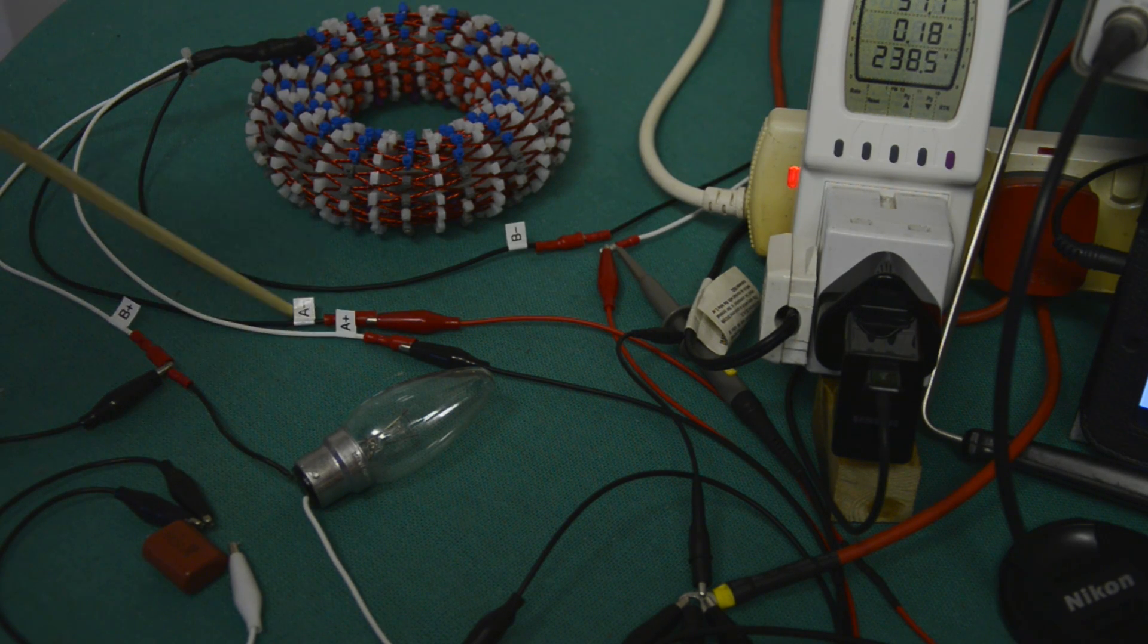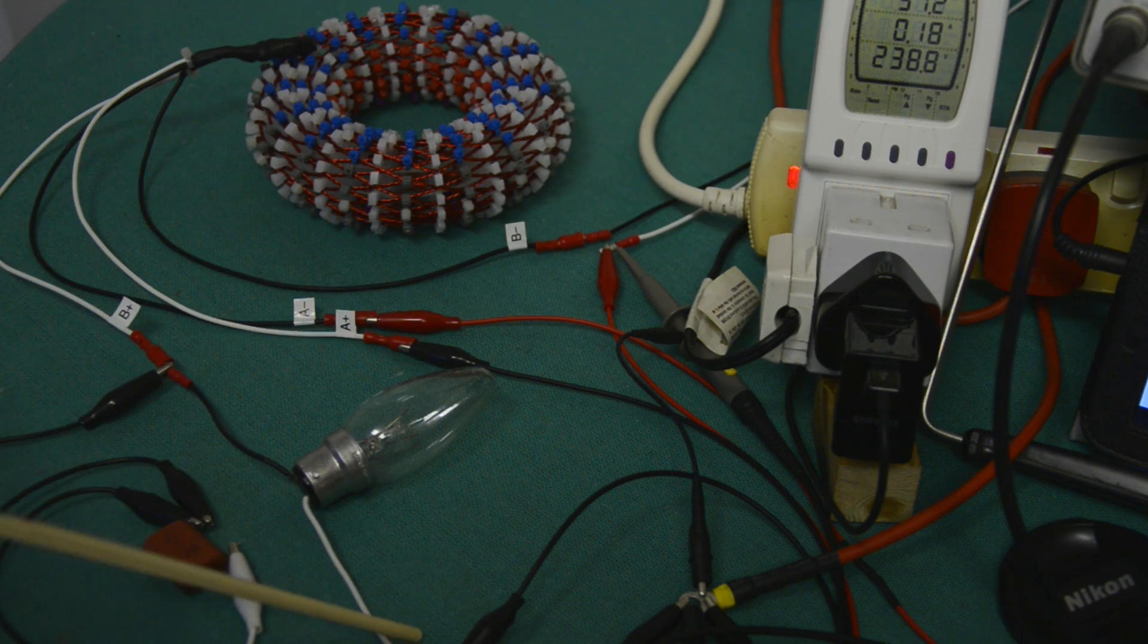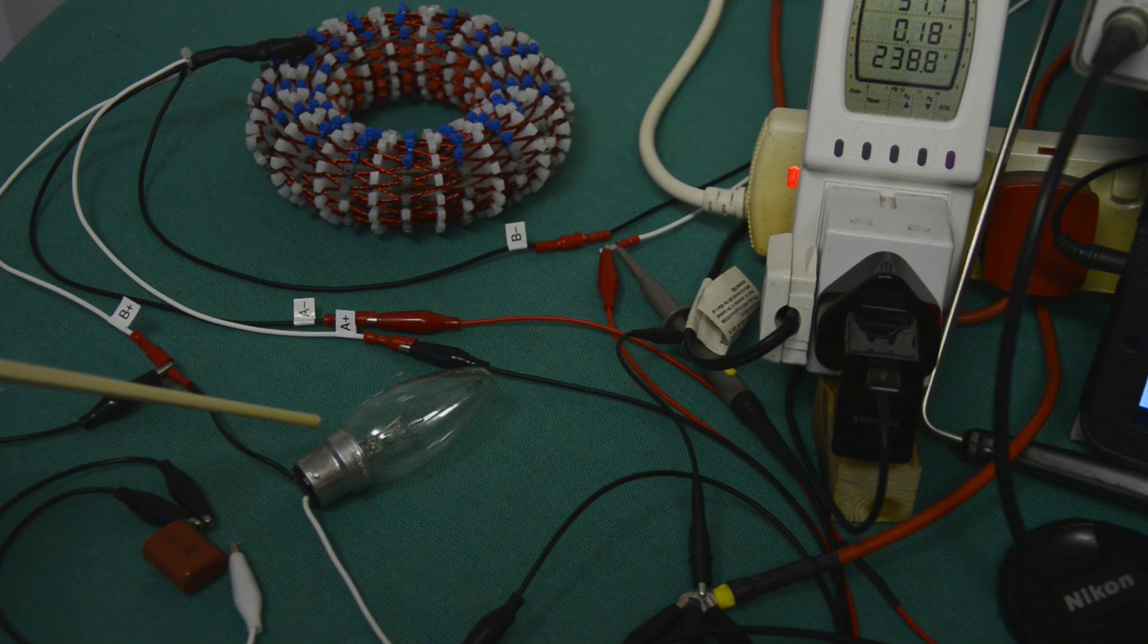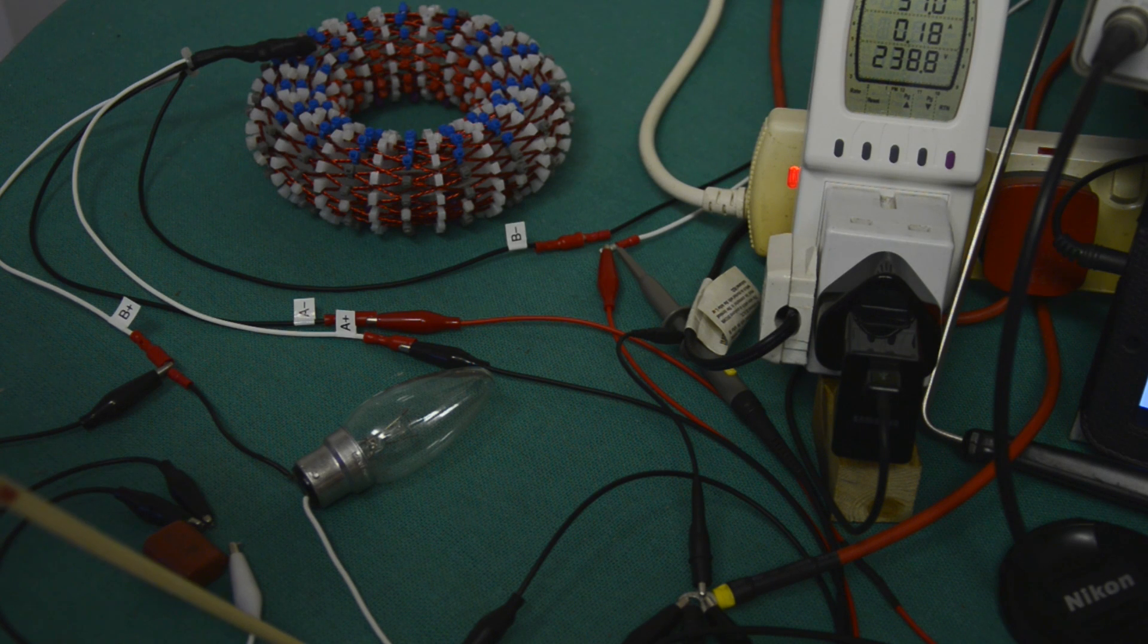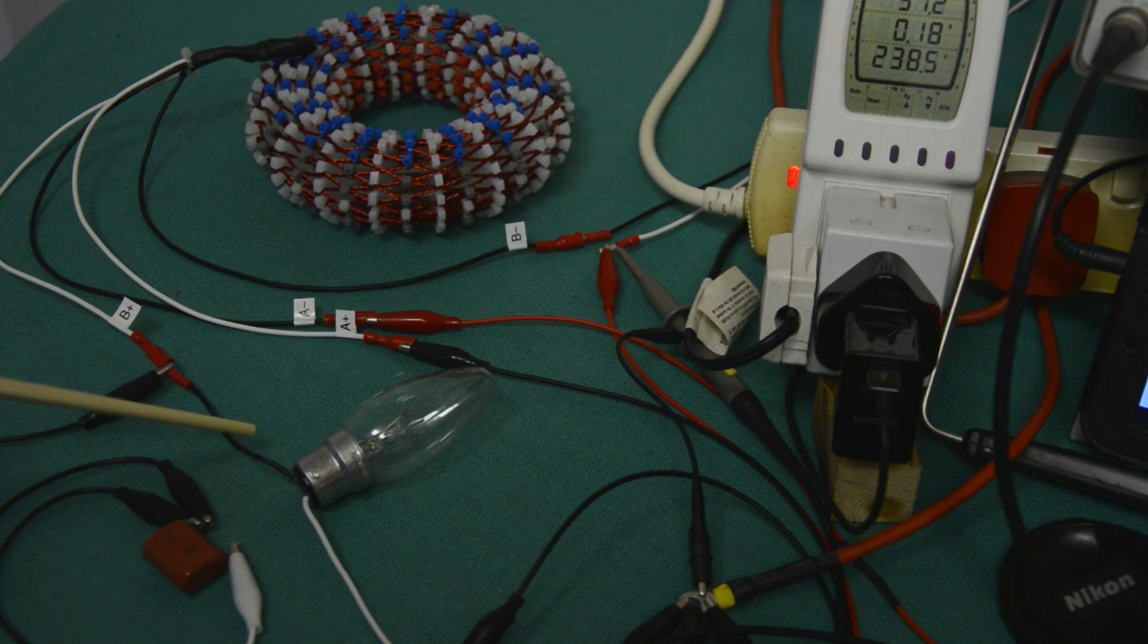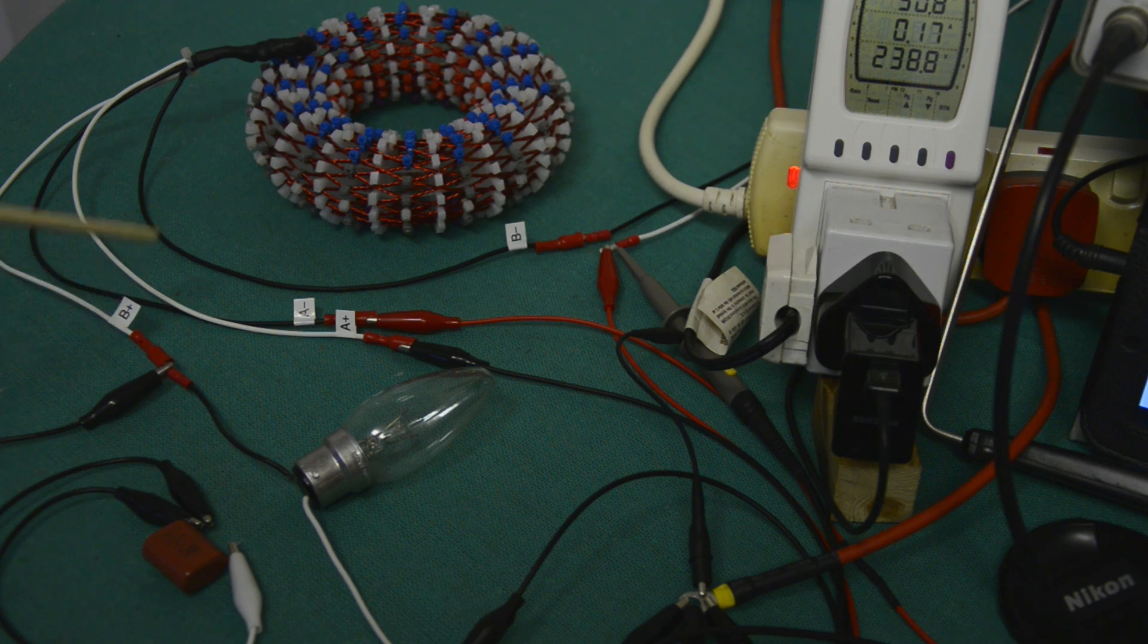The A minus side of the coil is connected to the hot side of this 40 watt incandescent light bulb via a current probe and the second of two RMS multimeters. The ground side of that light bulb is connected directly to the B plus of the coil.